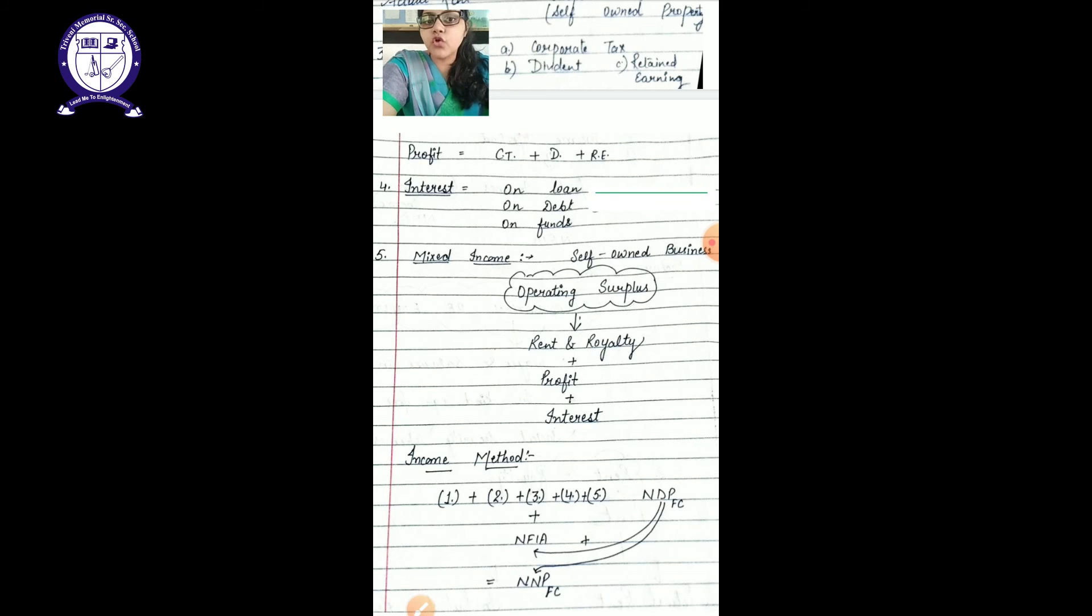All together they will form your domestic income. Domestic income means NDP at FC. When you are getting NDP at FC, same strategy which we have used in your chapter number 3, that is three relations.